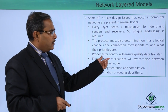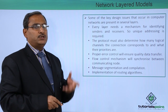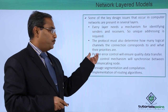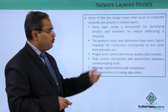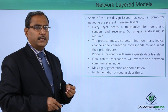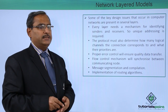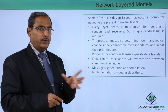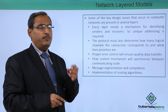Proper error control will ensure quality data transfer. We should not expect that during transmission data will be uncorrupted, so we must be proactive and ensure proper error control for quality data transfer. Flow control mechanism will synchronize the communicating nodes. If the sender sends data at a very fast rate and the receiver is not capable of accepting it, the message will be lost. There must be synchronization between sender and receiver, achievable only through flow control mechanisms.